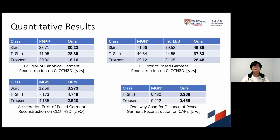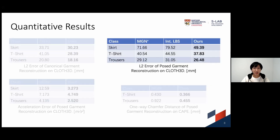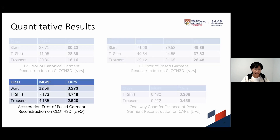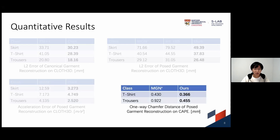We perform experiments on two large-scale datasets, CLOTH3D and CAPE. CLOTH3D is a synthetic dataset, meaning we can evaluate our reconstruction results against the ground truth meshes with vertex-to-vertex error. We outperform adapted baselines in both canonical garment reconstruction and posed garment reconstruction on all three garment types. We also report the acceleration error of our method, which also surpasses the adapted baseline. CAPE is a real scanned clothed human dataset which does not provide ground-truth garments; we report the one-way chamfer distance, and our method shows better performance.